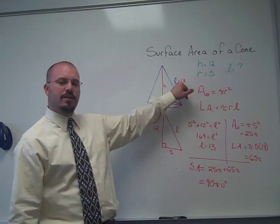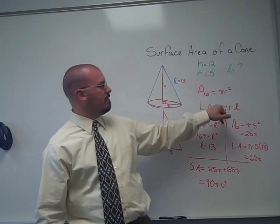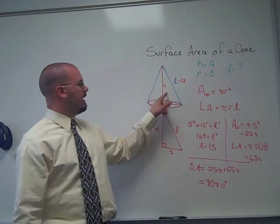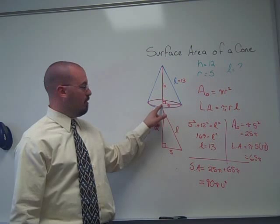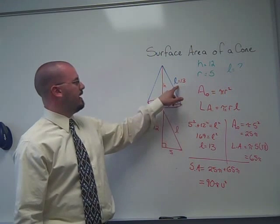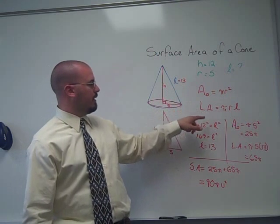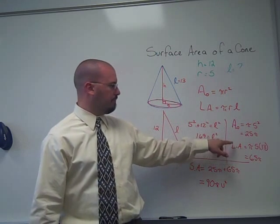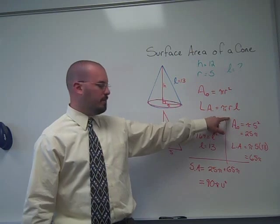Sometimes we are not given the slant height, and we need the slant height to find the lateral area. Since the height and radius of a cone meet at a right angle, we can use the Pythagorean Theorem to find the slant height. And once we have that, we can find the lateral area, add the lateral area to the area of the base, and we have our total surface area.